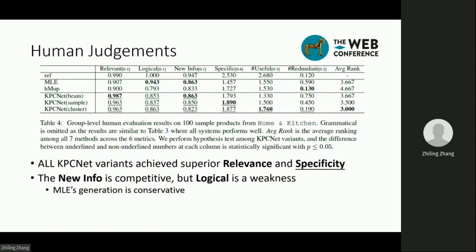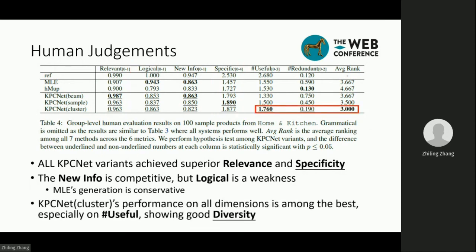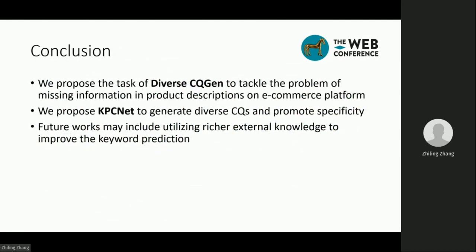Now, we show quantitative results of human judgments. All KPCnet variants achieve superior performance in relevance and specificity. Performance on seeking new information is also competitive, but performance on logicality is worse than MLE. We presume MLE achieves higher logicality because its generation is very conservative, sacrificing diversity and specificity. Among all KPCnet variants, KPCnet-cluster performs best on all dimensions, especially on number of useful questions, showing it can effectively promote diversity. In conclusion: we propose the task of Diverse CQ Generation to tackle missing information in product descriptions on e-commerce platforms; we propose KPCnet to generate diverse CQs and promote specificity; and future works may include utilizing richer external knowledge to improve keyword prediction.